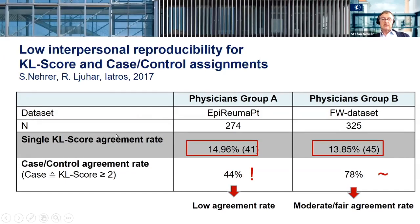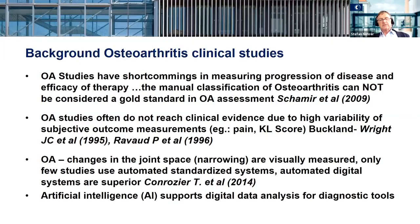We looked at that and found that the single agreement rate — that all the parameters are the same for one patient — is very low. Also, the incidence of osteoarthritis, meaning osteoarthritis yes or no, is even low in this cohort. So, osteoarthritis clinical studies lack objectivity; they are very subjective due to these scores and outcome parameters. Especially joint space narrowing is often assessed manually, which holds a lot of variability.